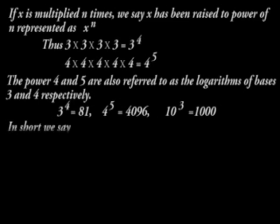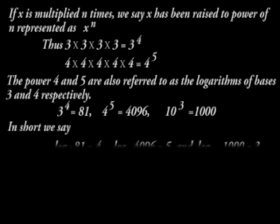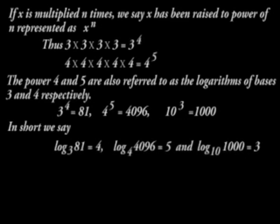we say that log to base 3 of 81 is equal to 4. Log to base 4 of 4096 is equal to 5. And finally, log to base 10 of 1000 is equal to 3.